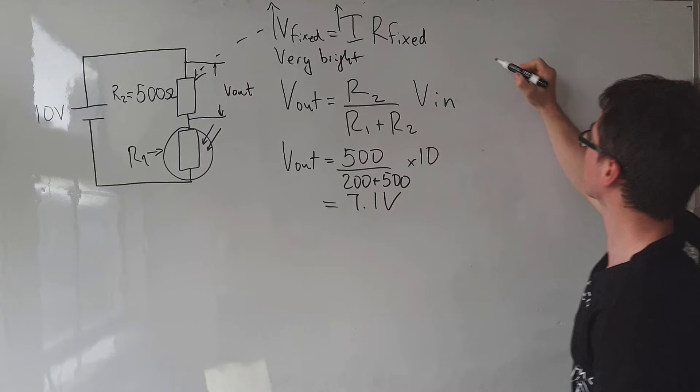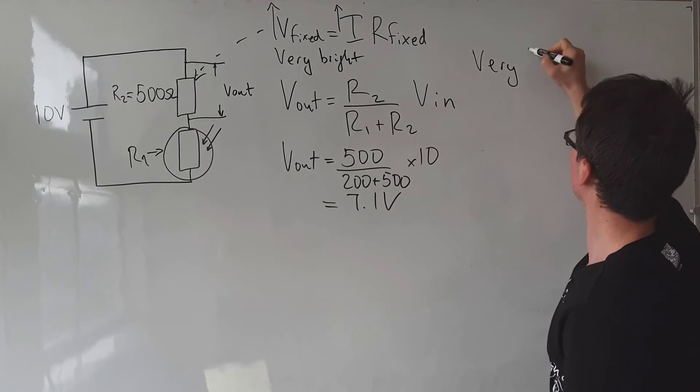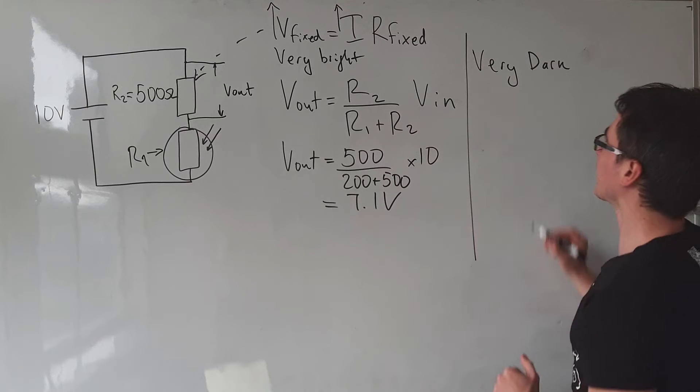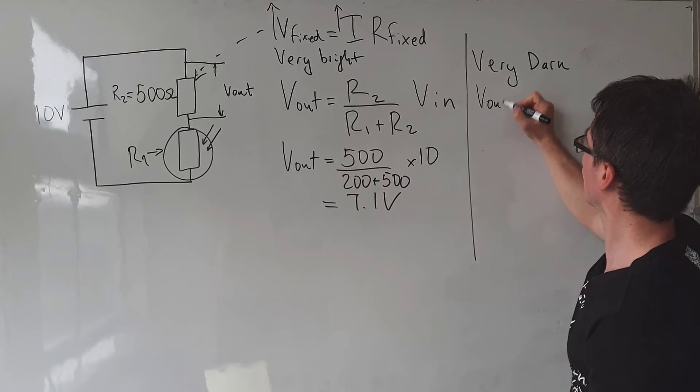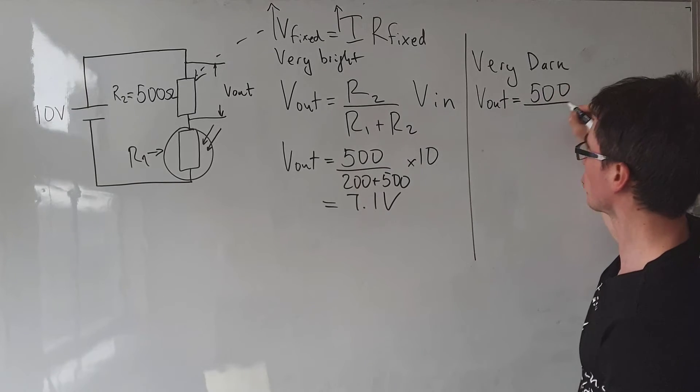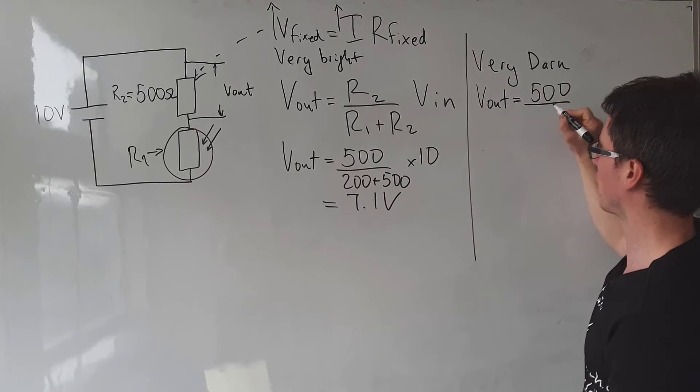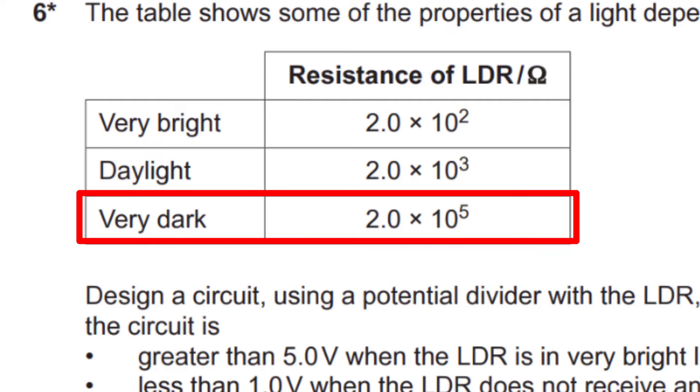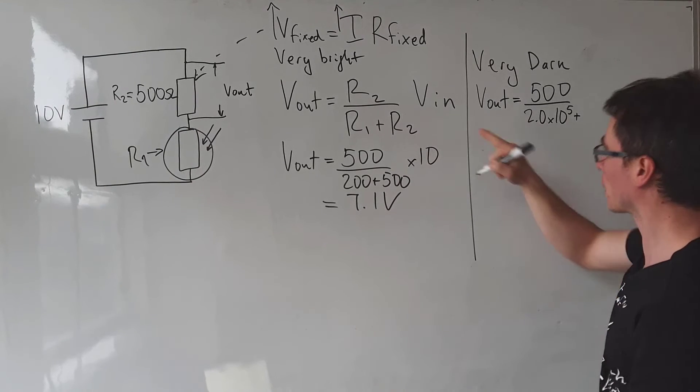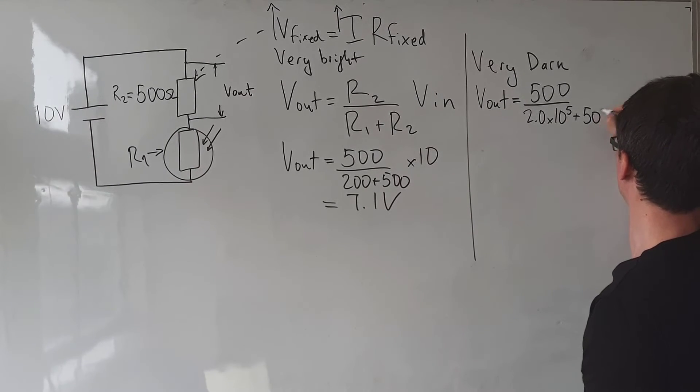Let's repeat the same calculation when it is very dark. We'll use the same formula. V_out will be equal to R2, which is 500, divided by R1. The value of R1 is now 2×10⁵, so that's 2.0×10⁵ plus 500.